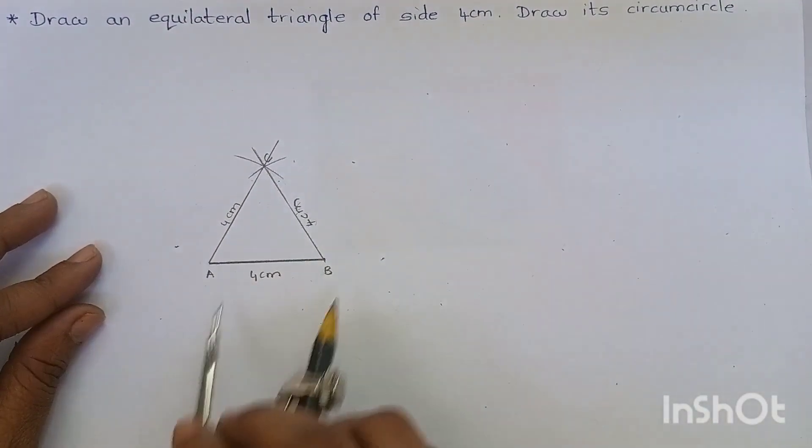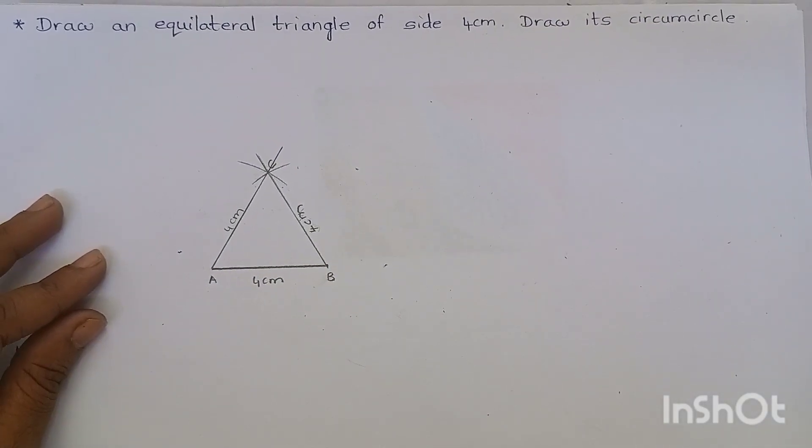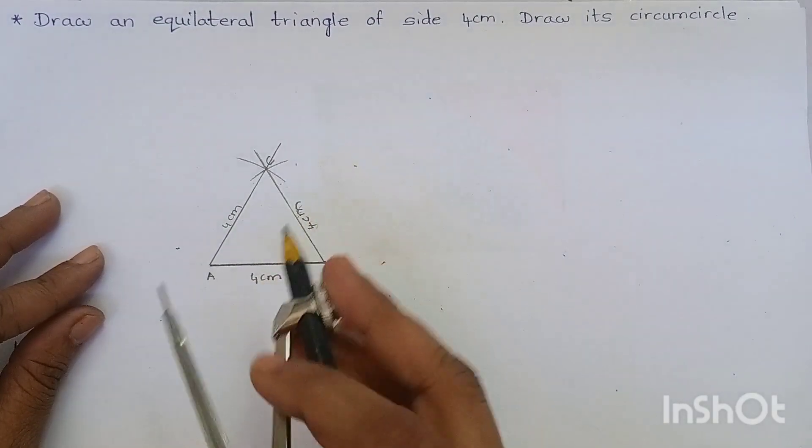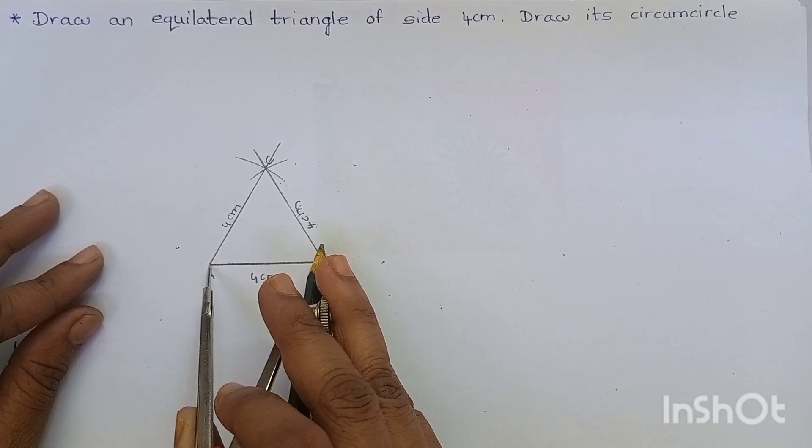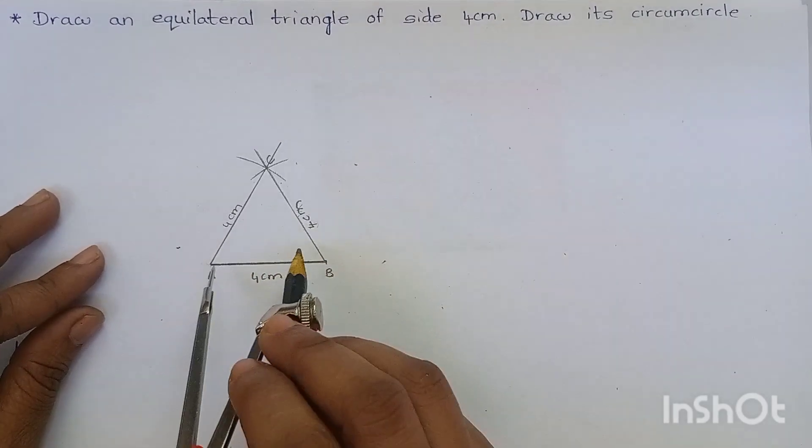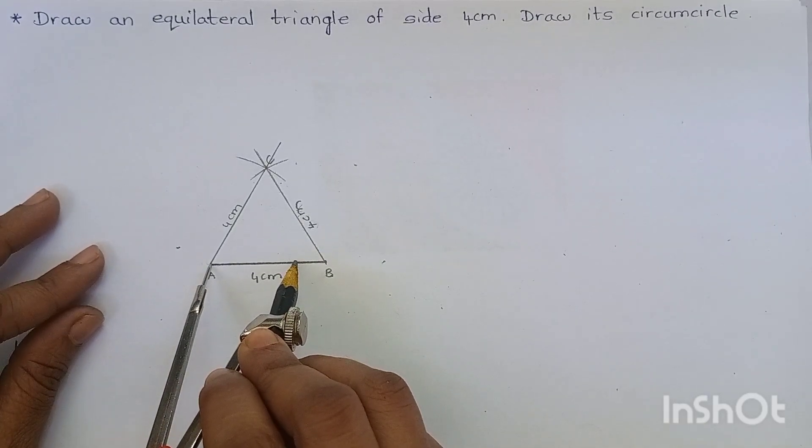I am taking the perpendicular bisector of AB. We know that to do the perpendicular bisector of AB, we have to take more than half of AB. This is more than half of AB.